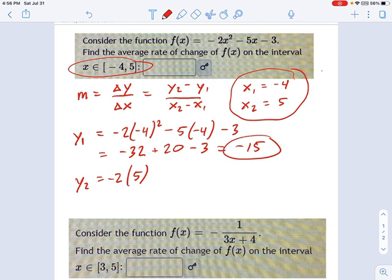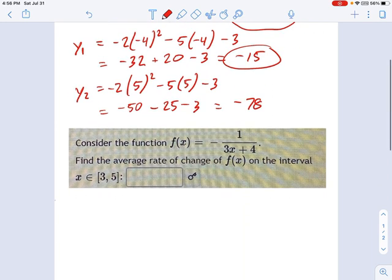Now this is negative 2 times 5 squared minus 5 times 5 minus 3, which equals, well, now I'm not going to do that in my head. That's getting a little big. Negative 50 minus 25 minus 3. Okay, negative 75, negative 78 or something like that. So we're almost done.